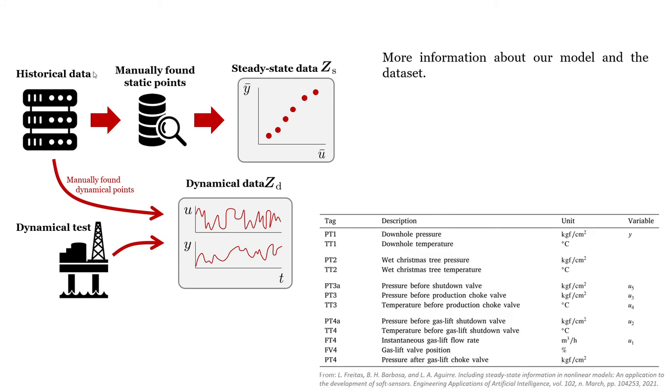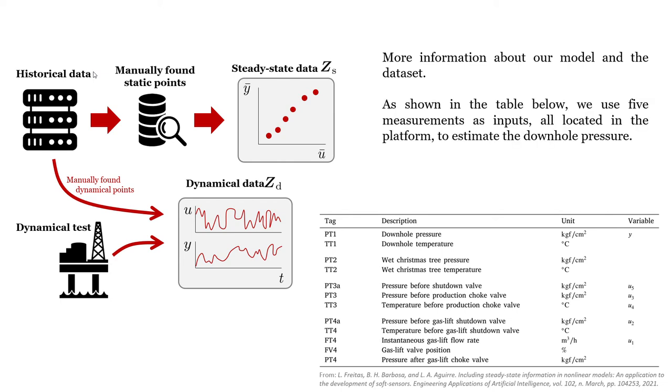More information about our model and the dataset. As shown in the table below, we use five measurements as inputs, all located in the platform, to estimate the downhole pressure. The steady-state data contains 32 static points manually found in historical data.